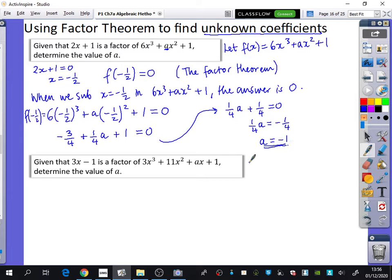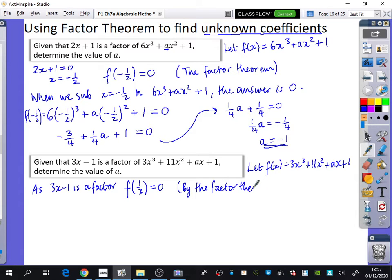I'm going to do this one slightly quicker. Let f(x) = 3x³ + 11x² + ax + 1. As 3x - 1 is a factor, f of what is going to equal 0? f(1/3) = 0, by the factor theorem.